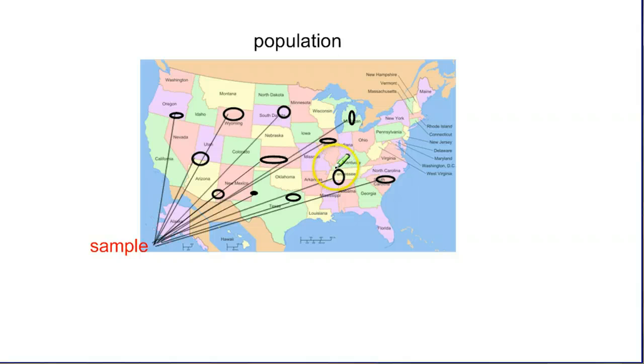Looking at this map of the United States, if our population was the United States, we would want to make sure that we had representation from all over. And sometimes we might control for that. We might intentionally make sure that we get a few people from every single state. Other times we might just say we're going to randomly choose a hundred people from this entire population, and maybe it's possible all of them would come from Texas, but most likely they would come from a range of different places.